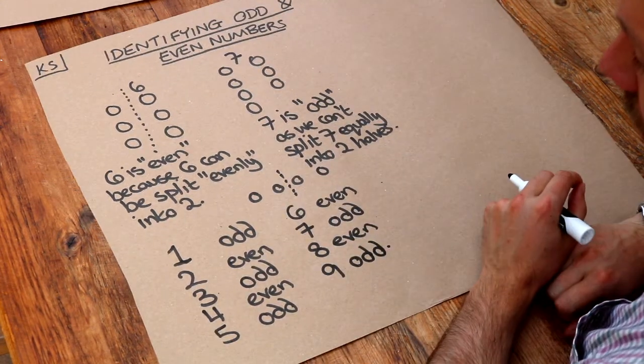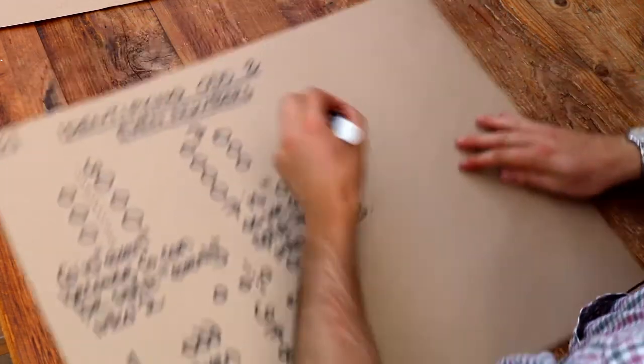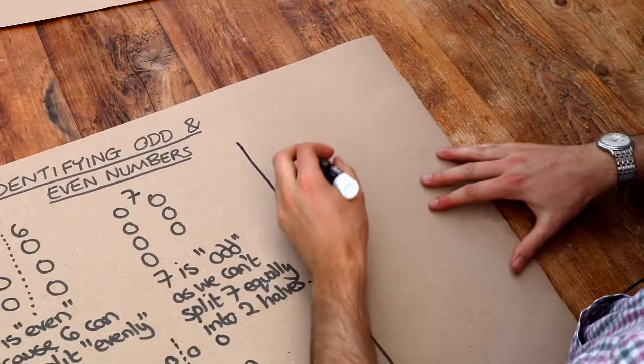Now if you want to see whether a larger number is odd or even, you just have to look at the last digit.